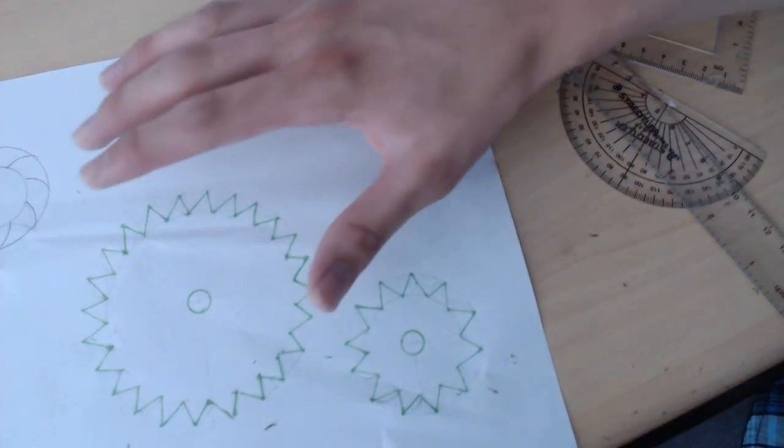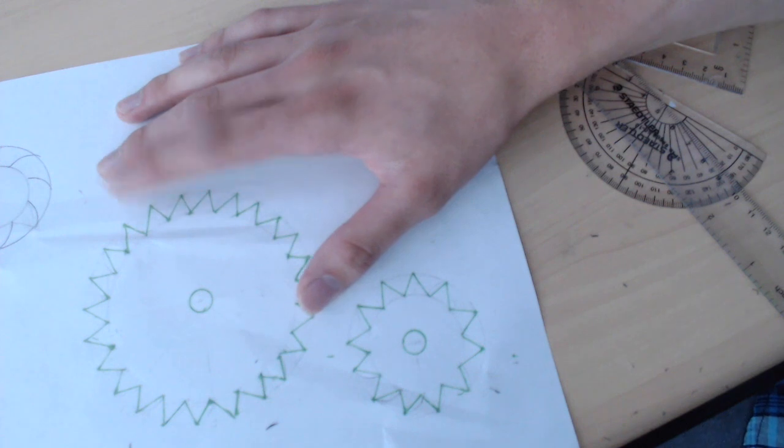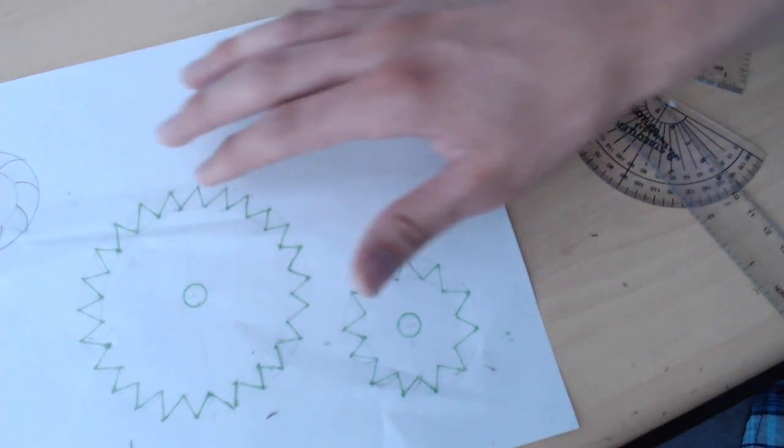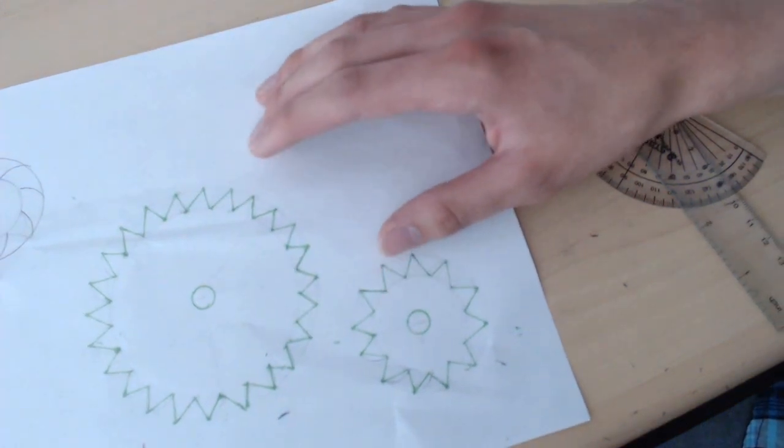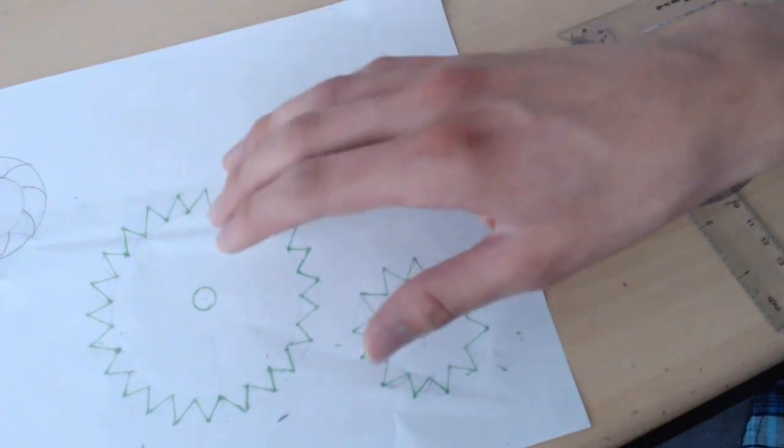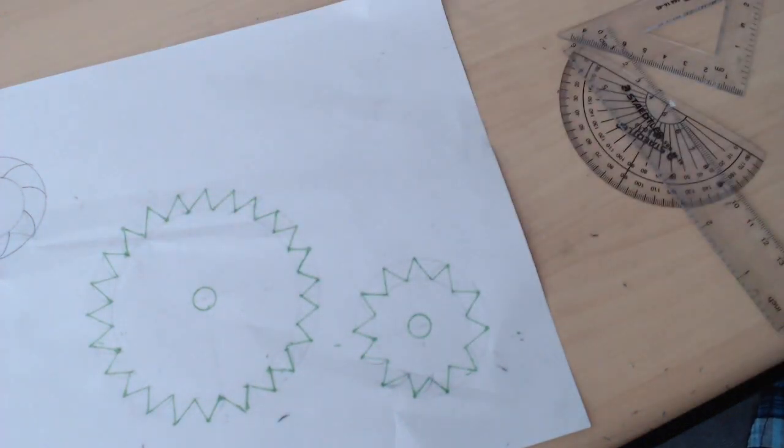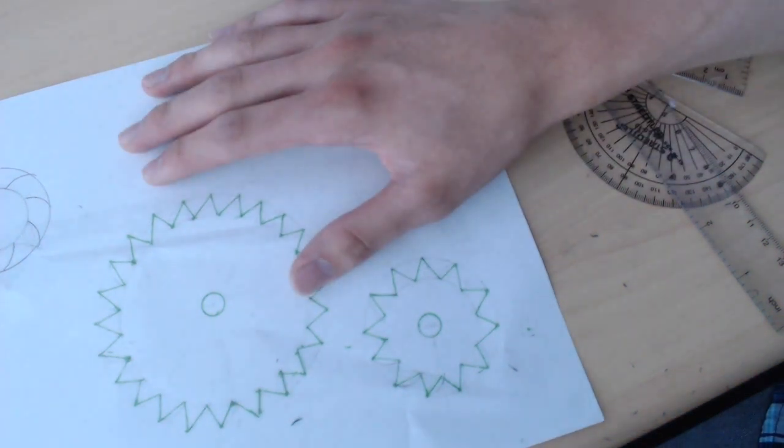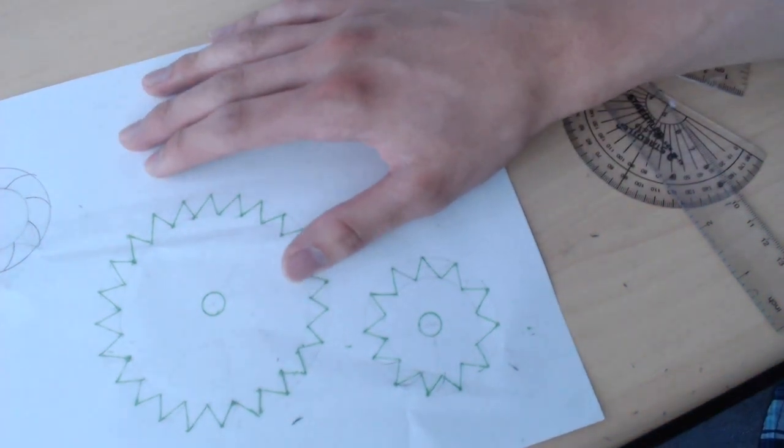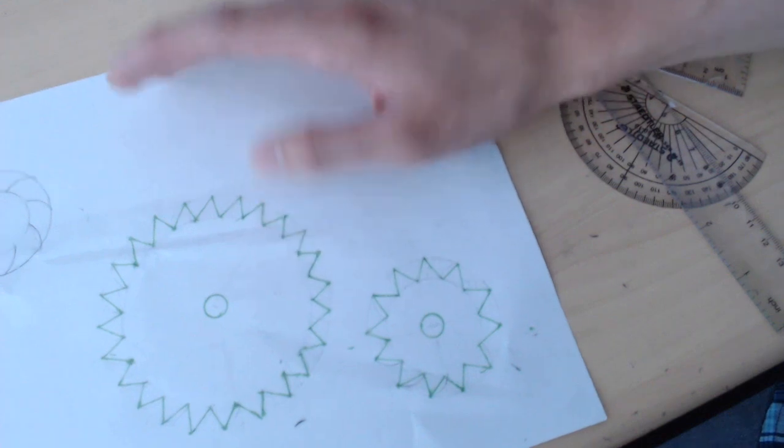If you wanted to make this into a functional gear that would actually mesh, you would cut this out onto material and then file it down until the gear meshes. This is how gears were made originally on, for example, early clocks using gears designed in this way.